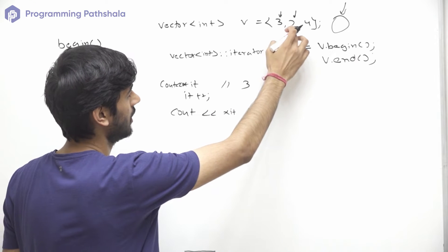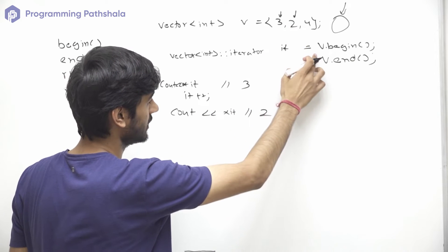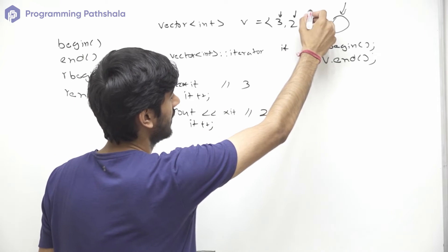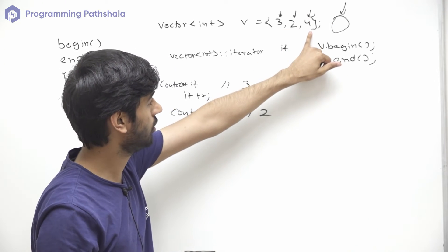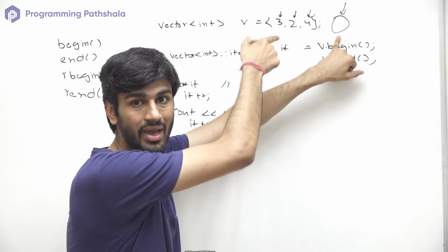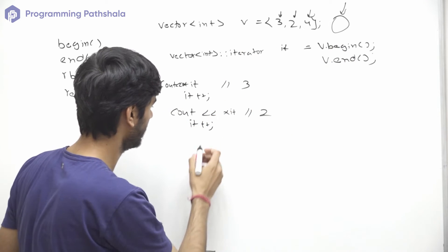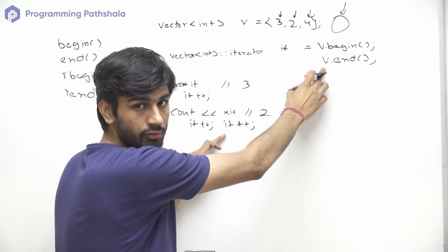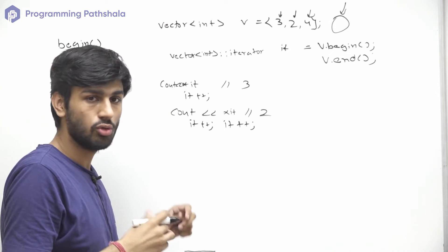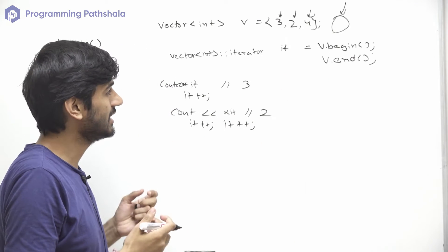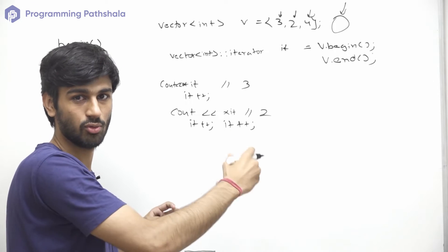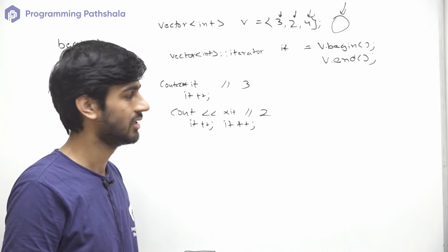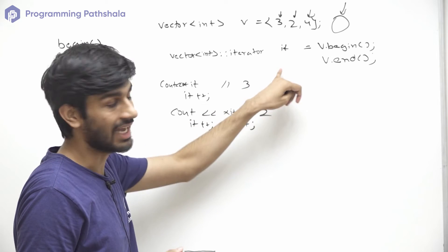Similarly, if we increase the iterator once more, it will start pointing to 4. And if we increment it again, it will start pointing to the imaginary position which is v.end(). To traverse a vector, we can either use a for loop with an index from 0 to the last index, or use iterators.